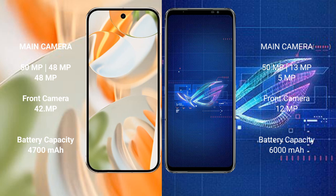The Google Pixel 9 Pro features a rear triple camera setup: 50MP plus 48MP plus 48MP, and a 42MP front camera. The ASUS ROG Phone 6 also features a rear triple camera setup: 50MP plus 13MP plus 5MP, with a 12MP front camera.